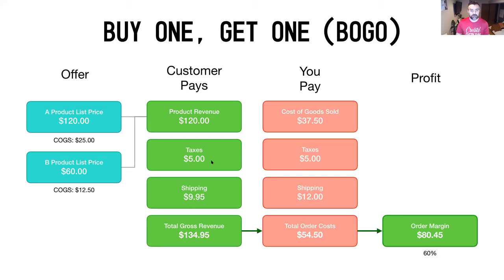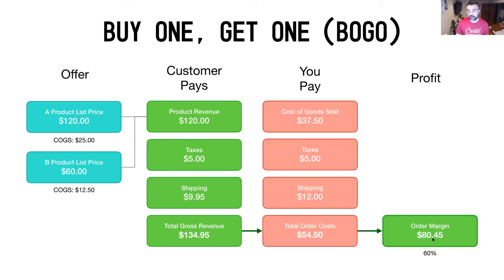Taxes remain roughly the same as a pass-through. Shipping may be slightly higher with an extra item included, so we've accounted for that. Total order costs come to $54.50, but the customer is paying you $20 more than in the first scenario. That means you can absorb the higher costs and still generate more order margin — $80.45 in this example. As a percentage it's 60%, slightly below the 67% from the first example, but you're making more absolute profit.